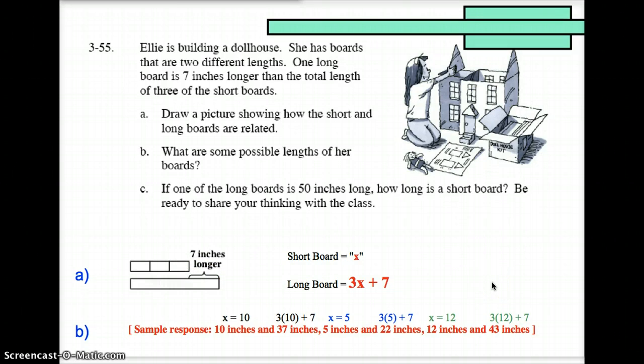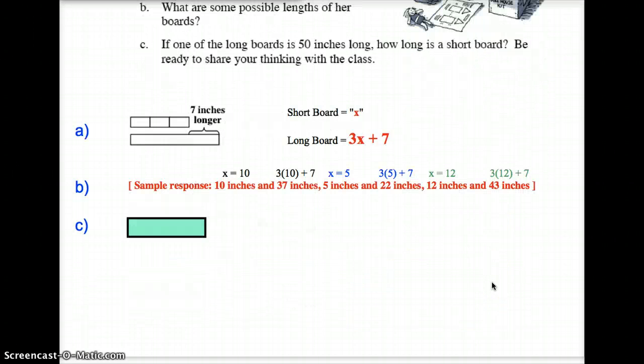Hopefully that makes sense. Let's continue moving on. Letter c says this time let's talk about the long board. The long board is 50 inches long, so this board right down here, the long board, is 50 inches long. So the question becomes, how long is the short board? Well, you should understand that these three boards right here are seven inches shorter than this longest board, so we've got to take seven inches away from that 50. 50 minus 7 is 43 inches, so these three boards right here all total 43 inches.